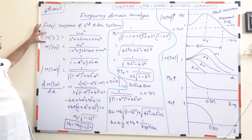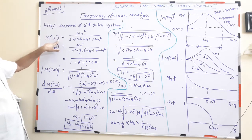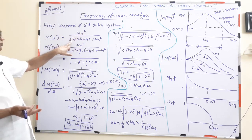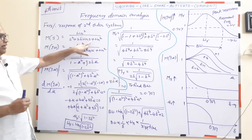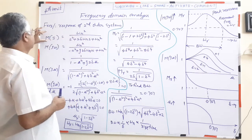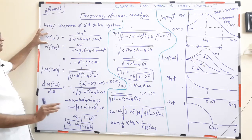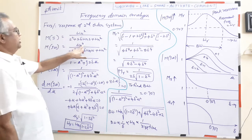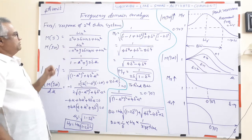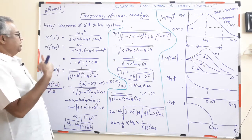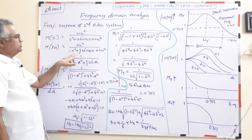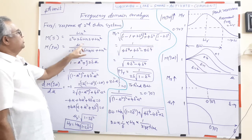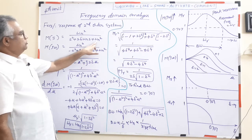We know that for any second-order system, M(s) — the closed-loop transfer function — equals ωn² divided by (s² + 2δωn·s + ωn²). This is the standard form of a second-order system. Now we replace s with jω, giving ωn² divided by ((jω)² + 2δωn·(jω) + ωn²). Since (jω)² = −ω², we substitute accordingly.